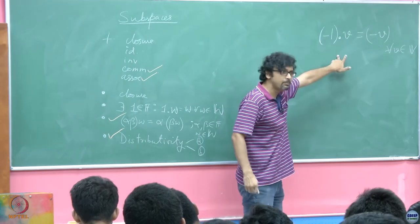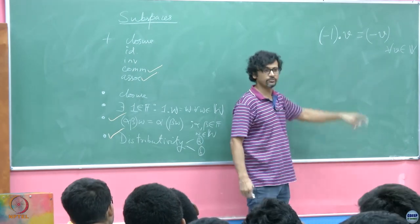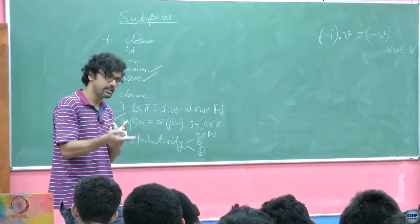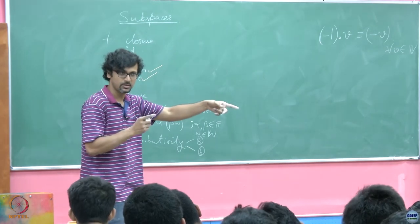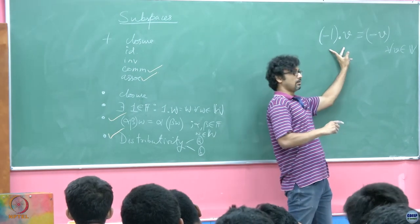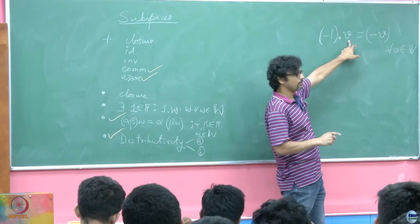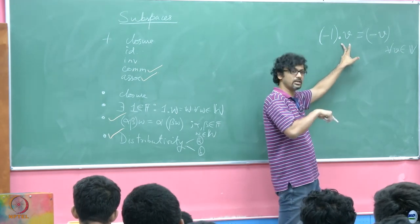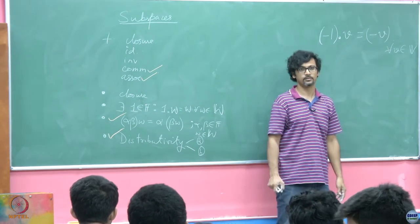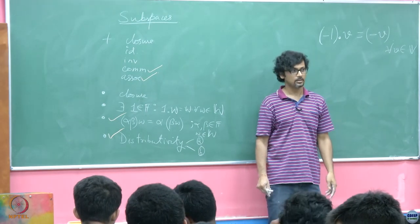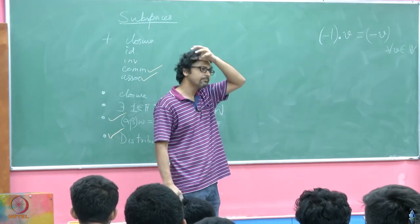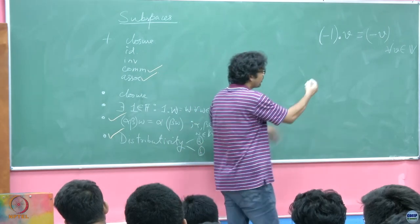On the left-hand side I am giving you a recipe for obtaining the additive inverse. I am saying: go ahead, look for the multiplicative identity in the field and take its additive inverse. So the additive inverse of the multiplicative identity of the field, acting on this vector by means of the scalar multiplication I have defined, leads to the additive inverse of the element itself.